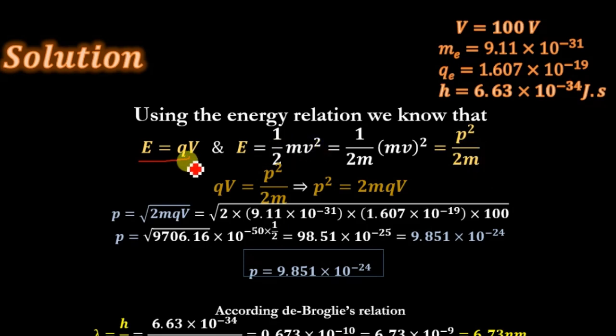Now comparing these two equations, E = qV and E = p²/2m, we get qV = p²/2m. Solving this equation for p, we get p² = 2mqV.